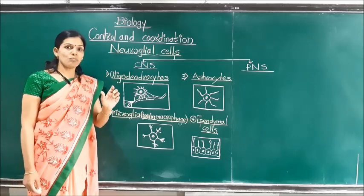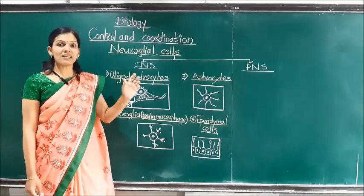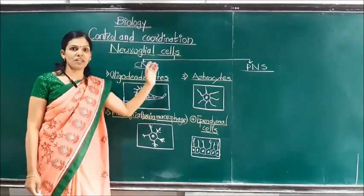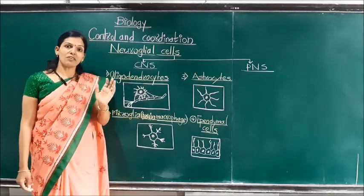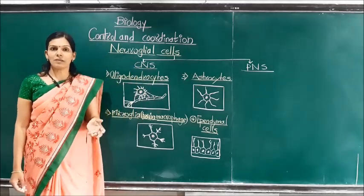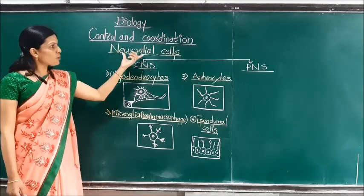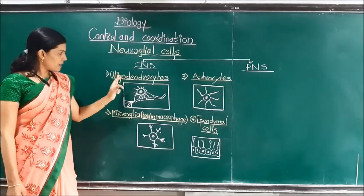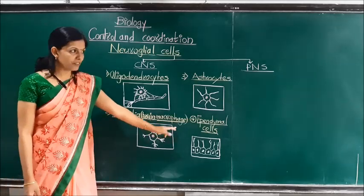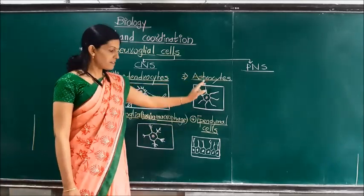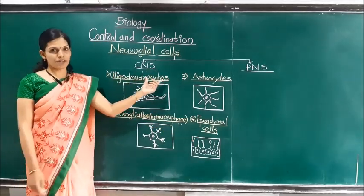Homeostasis — 'homo' means constant and 'stasis' means static state — that is, they maintain constant conditions in the nervous system. They also give protection to the neurons from injury. According to their presence in the CNS, the neuroglial cells are of four types: oligodendrocytes, microglia or brain macrophages, astrocytes, and ependymal cells.